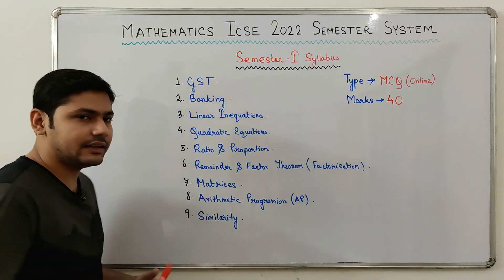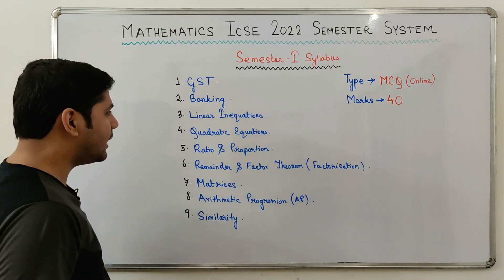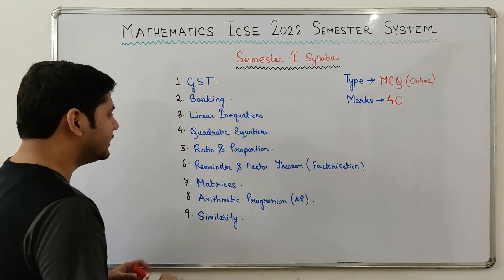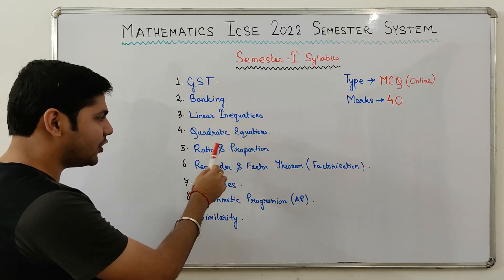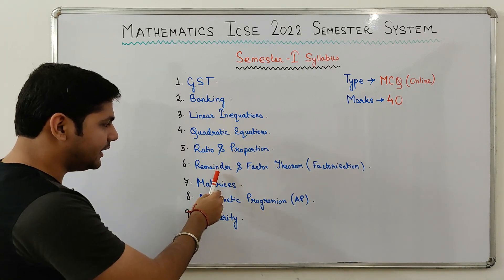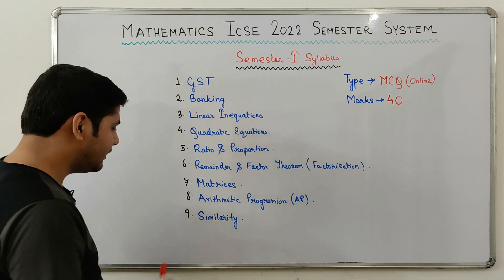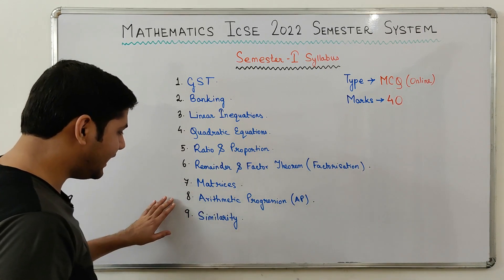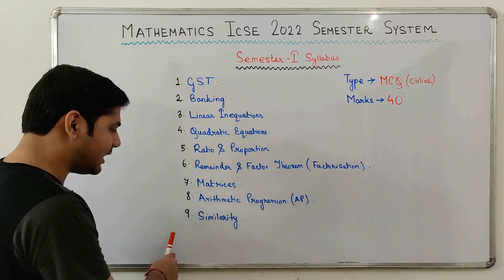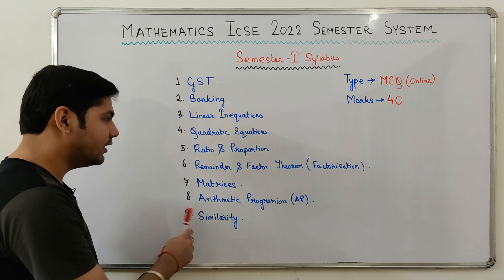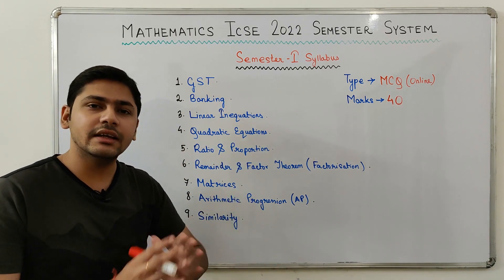There are nine chapters in the syllabus for semester one. The first chapter is GST (Goods and Services Tax), second is Banking, third is Linear Inequations, fourth is Quadratic Equations, fifth is Ratio and Proportion, sixth is Remainder and Factor Theorem (also called Factorization), seventh is Matrices, eighth is Arithmetic Progression (AP), and the ninth and final chapter is Similarity.